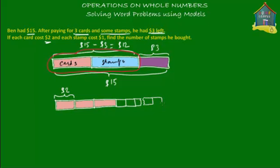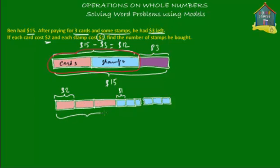That's the quantity that's unknown. These are the stamps — let's color them blue. Each stamp costs $1. So how much did he spend on the cards? He bought three cards each costing $2, so 2 plus 2 plus 2, or 3 times 2, and 3 times 2 equals 6. So he spent a total of $6 on the cards.